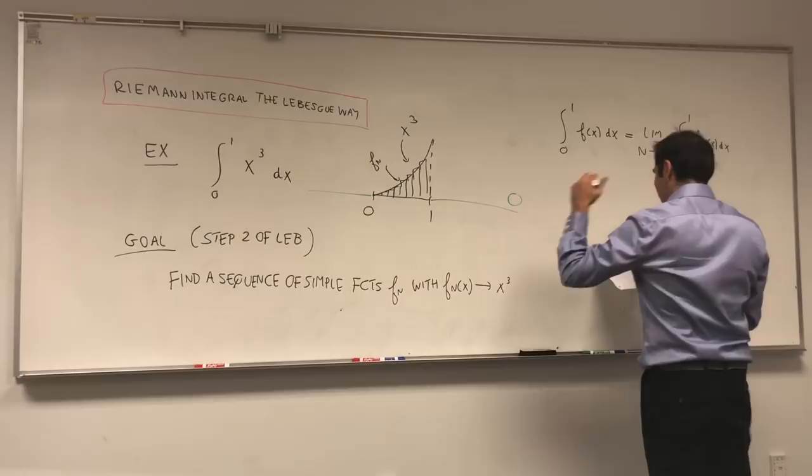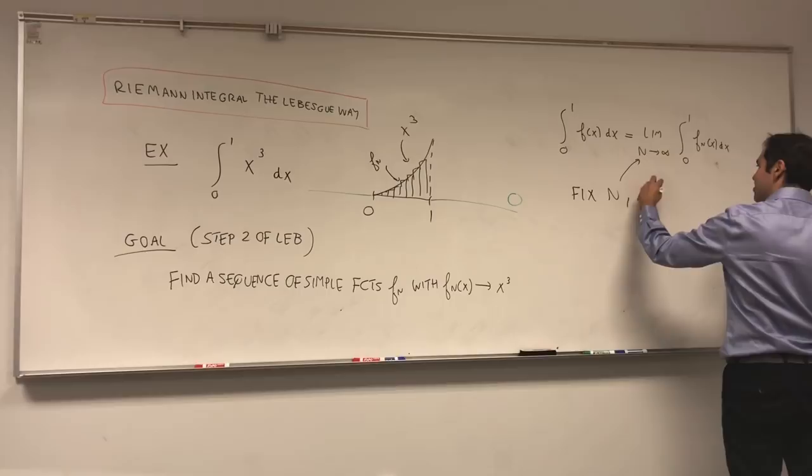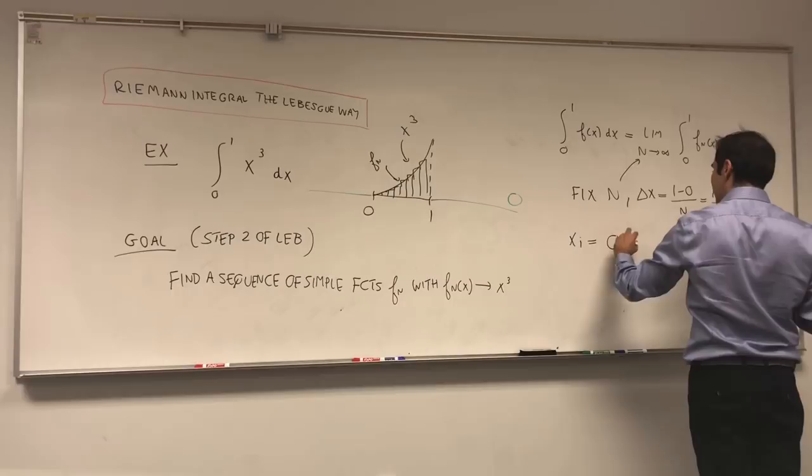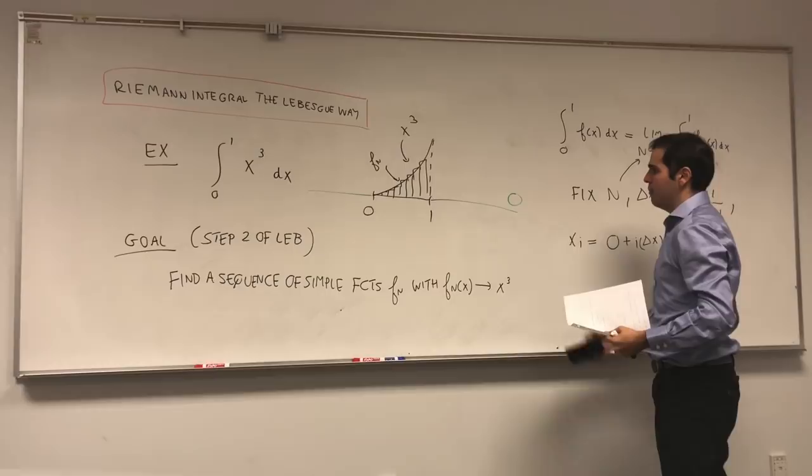Let's recall what Riemann integrals are. So, fix n, and then subdivide our rectangles. The width will be 1 minus 0 over n, which is 1 over n. And then, your endpoints are a plus i delta x, which is i over n. So this gives you your partition of your x's.